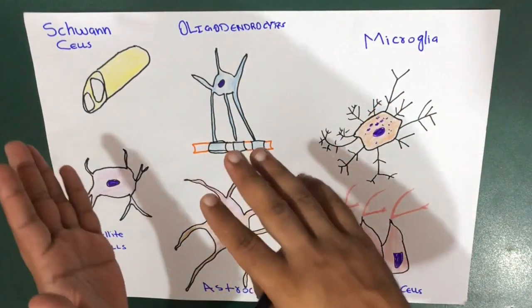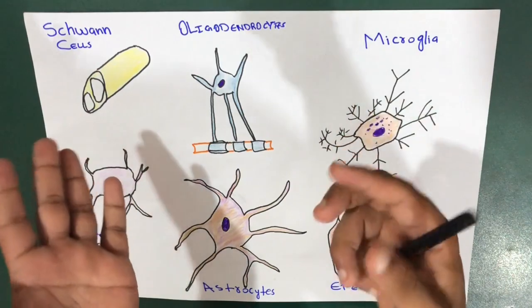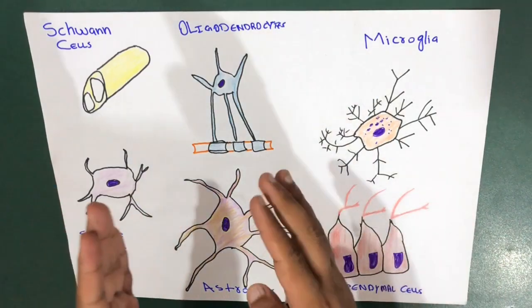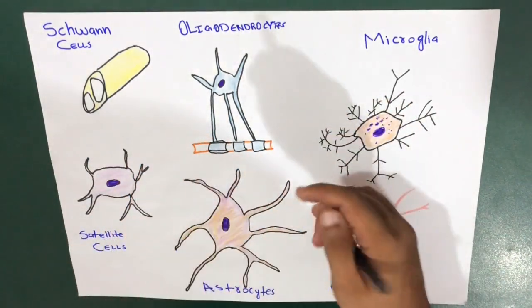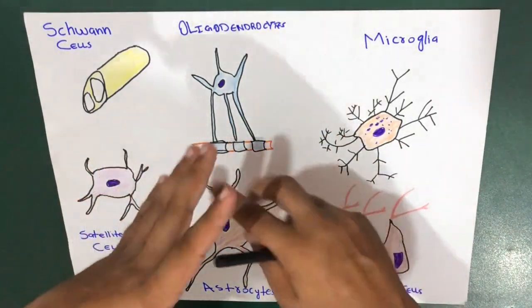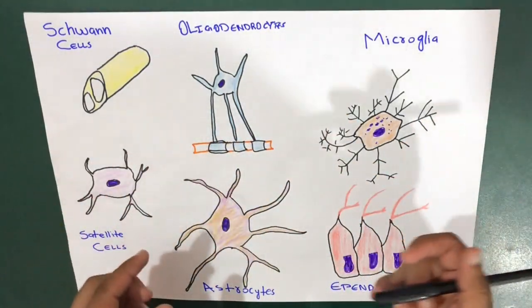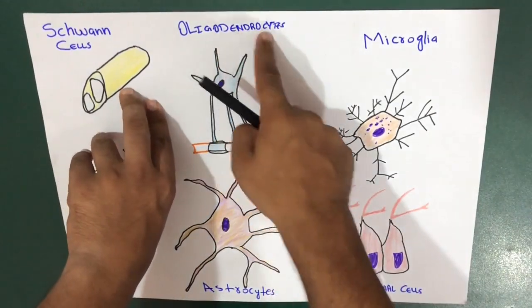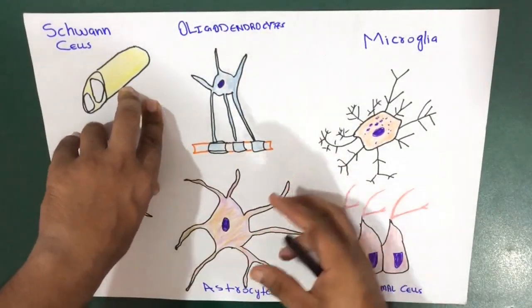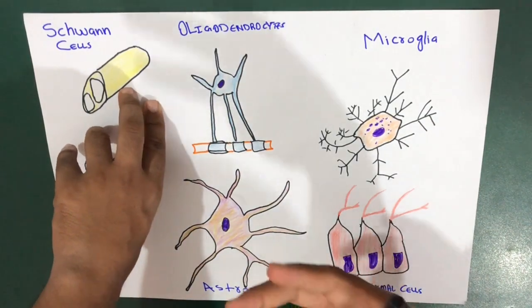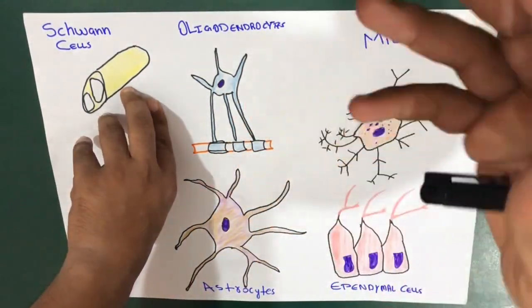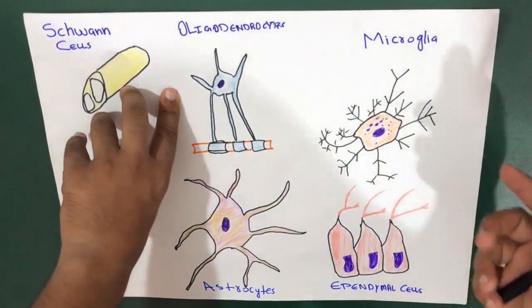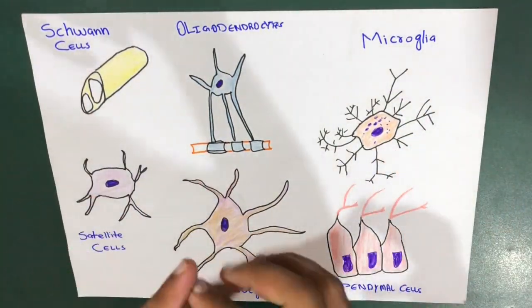Glial cells are the most abundant cell type in the central nervous system — even more than the actual neurons. There are six types of glial cells: Schwann cells, satellite cells, oligodendrocytes, astrocytes — which are kind of star-shaped, as 'astro' relates to sky and astronomy — microglia, and ependymal cells. These are the six basic types.